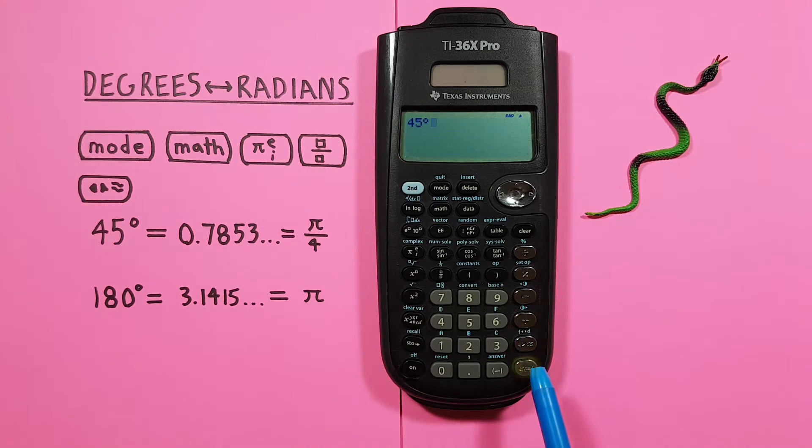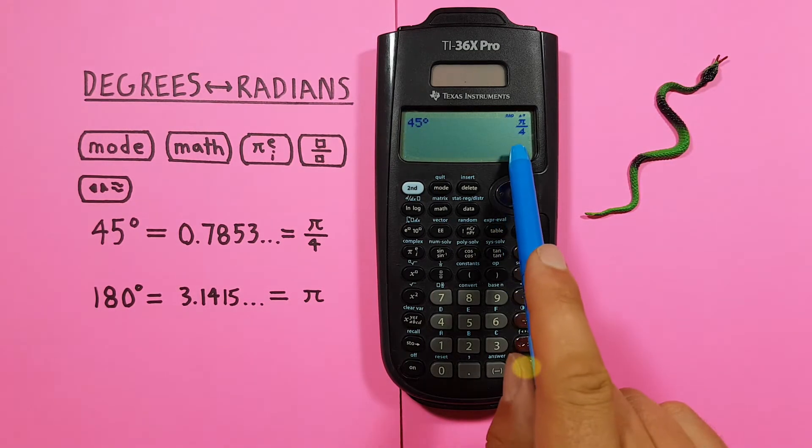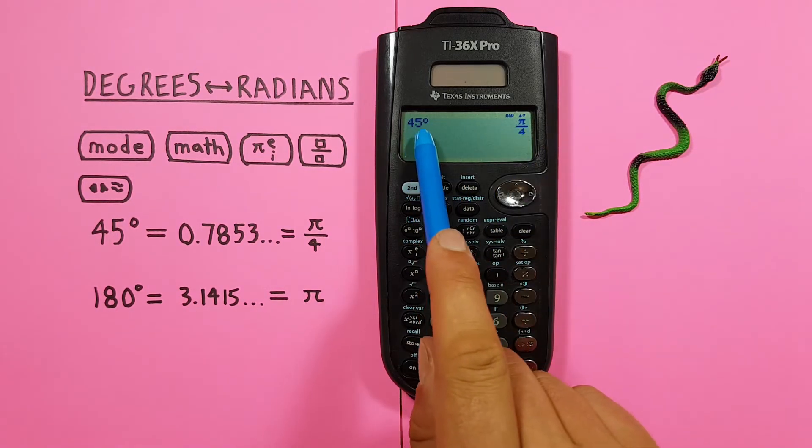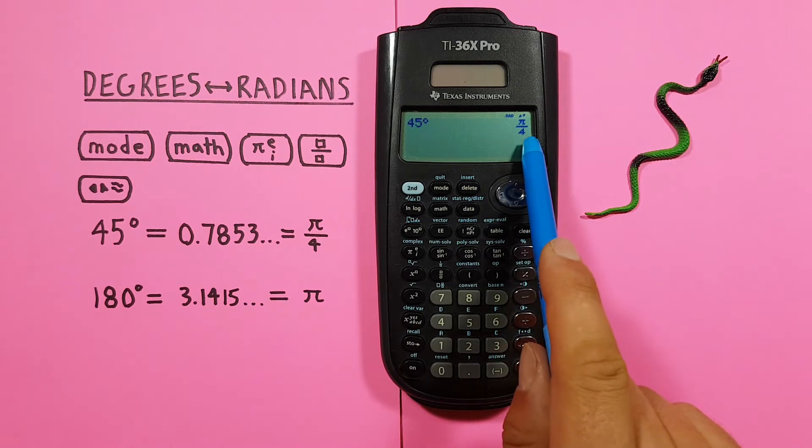Now if we press Enter. We see we get PI over 4 radians. So 45 degrees is equal to PI over 4 radians.